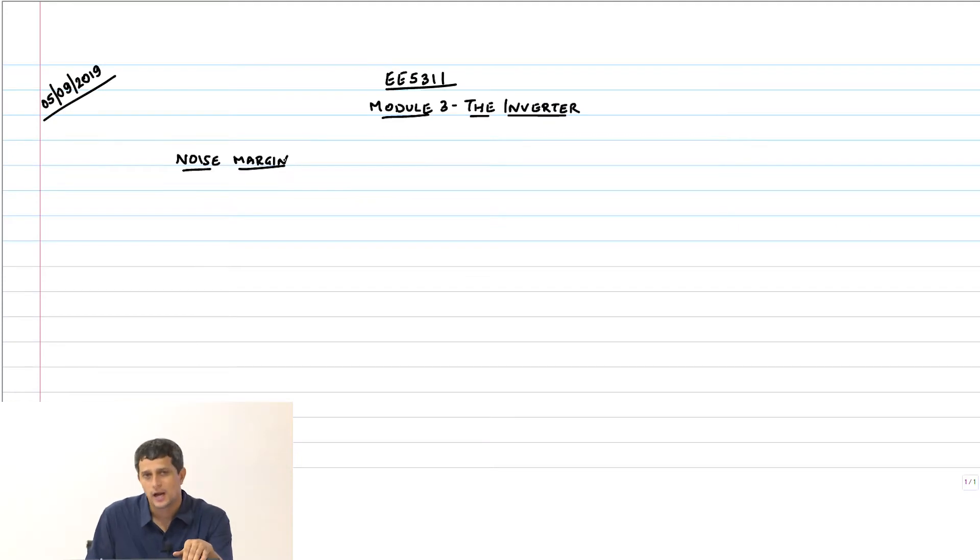We derived from first principles the values for VIL and VIH for a long channel inverter, and we said we needed to make no approximation whatsoever.